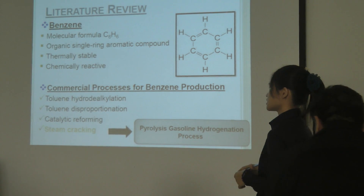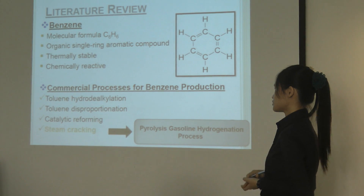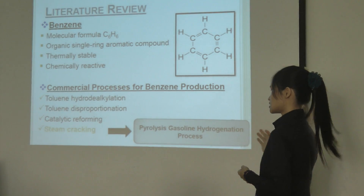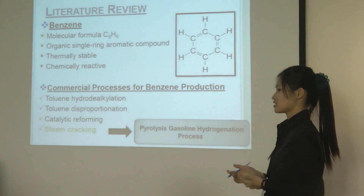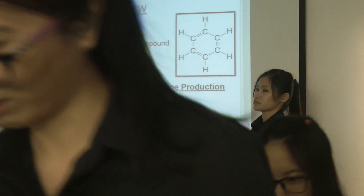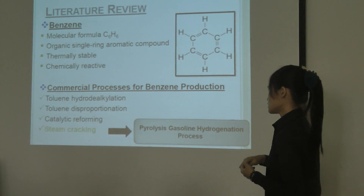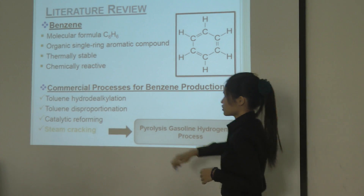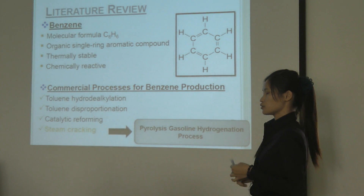There are a few commercial processes available for benzene production: toluene hydrodealkylation, toluene disproportionation, catalytic reforming, and steam cracking. In terms of complexity and the number of variable side products, catalytic reforming and steam cracking are ruled out over toluene hydrodealkylation and toluene disproportionation. Because in toluene disproportionation, only benzene, xylene, and toluene can be produced.